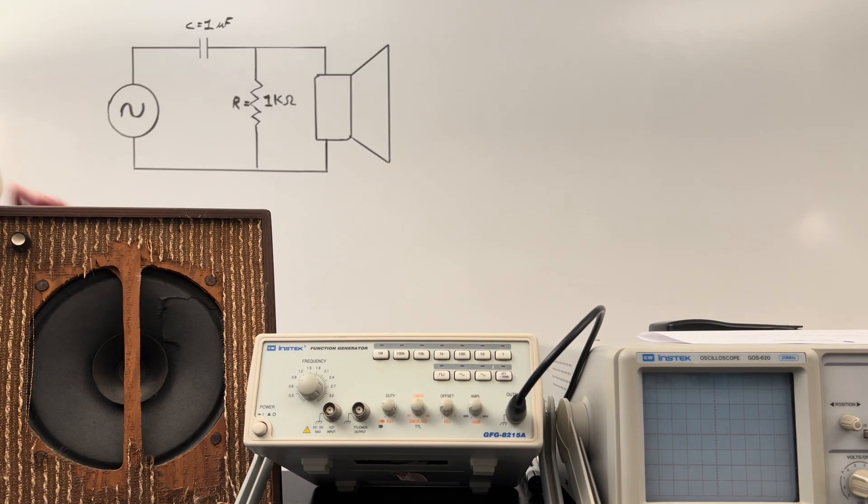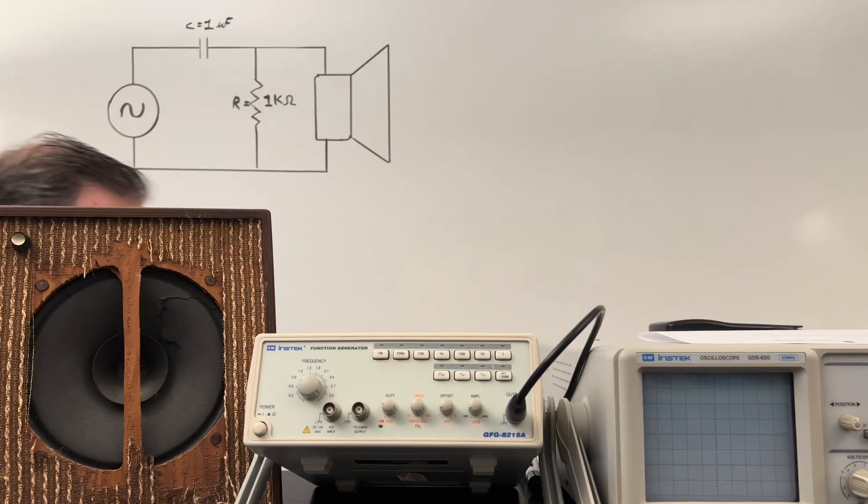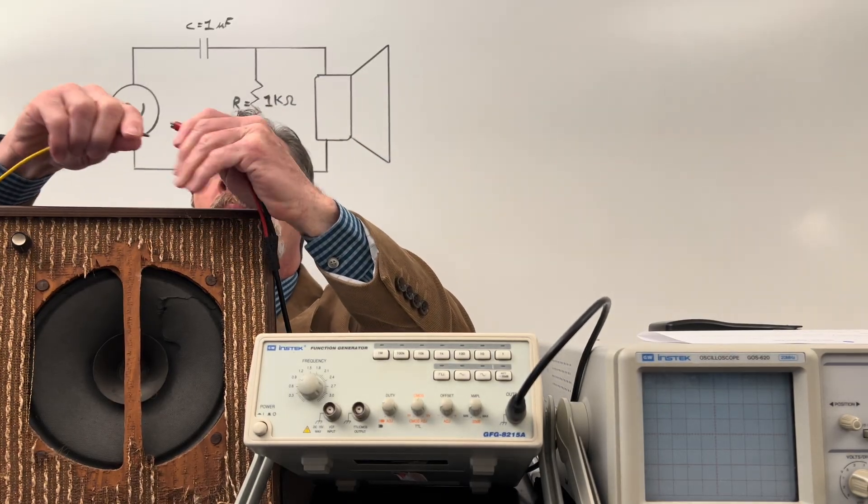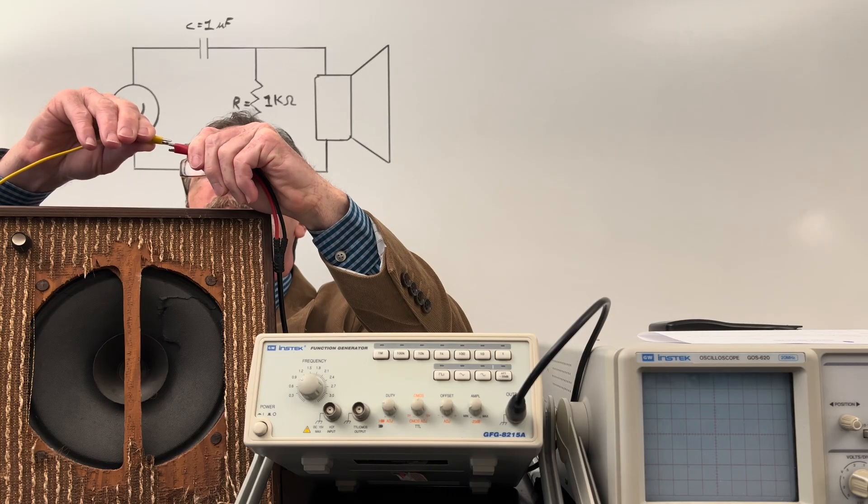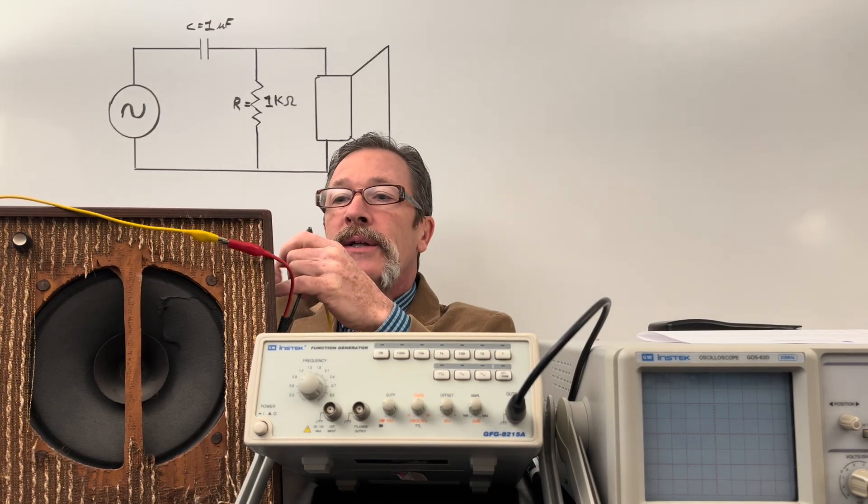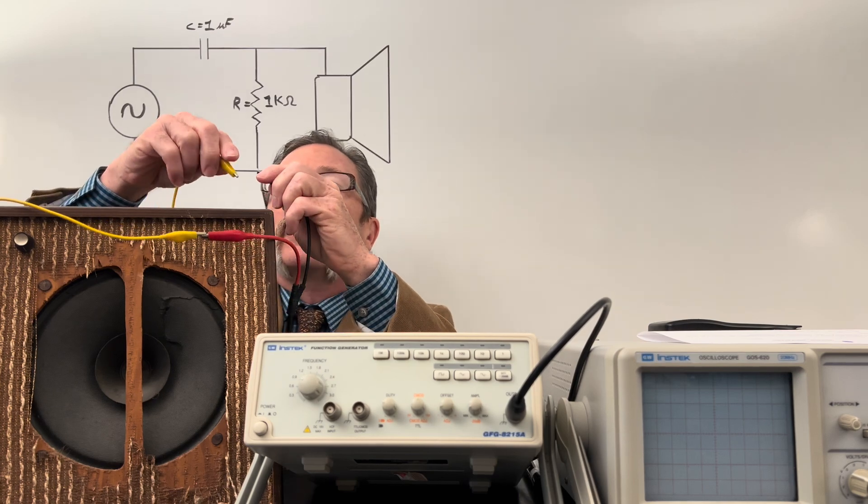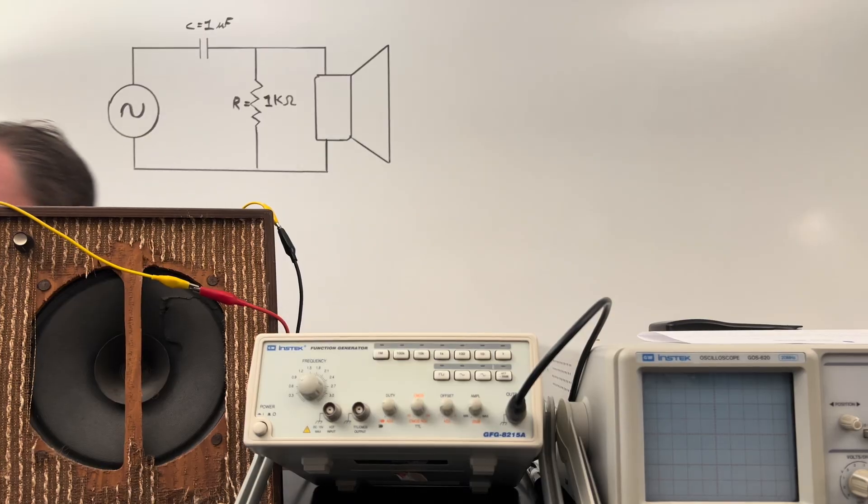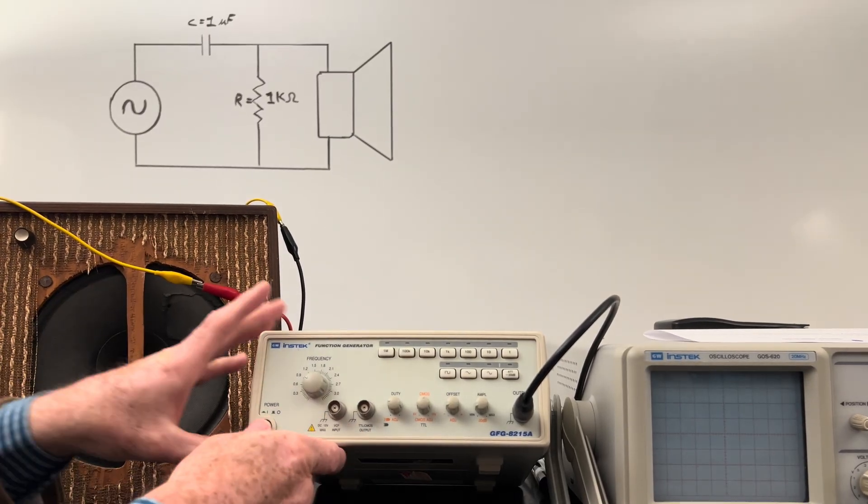I'll take my function generator and connect a red wire with yellow for the speaker. Then I'll hold these out front so you can see exactly how the circuitry is being put together. Now I can turn this on and we'll be able to hear it right away.